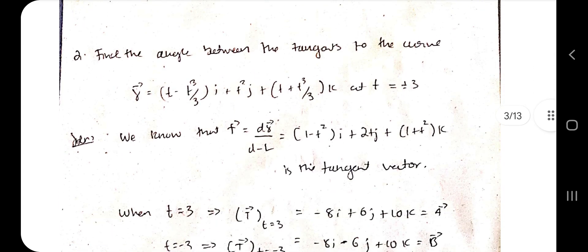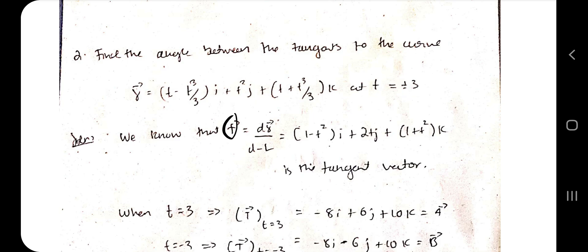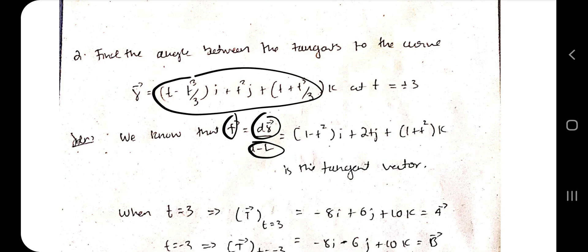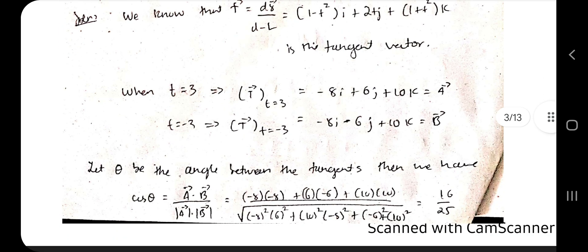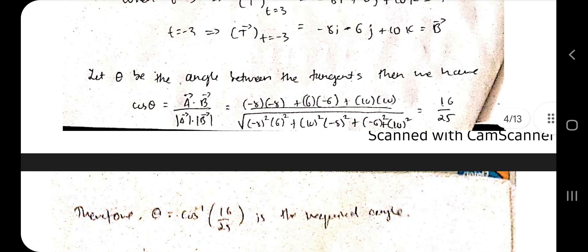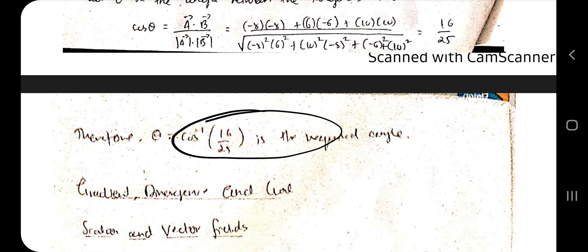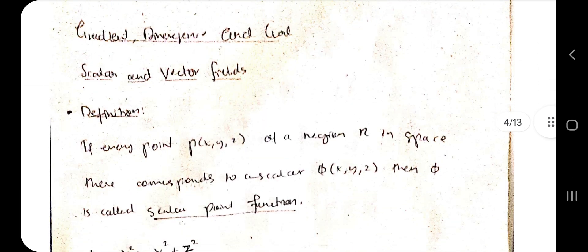Consider another example where you have to find the angle between the tangents to a curve at t = +3 and t = −3. Differentiate the vector with respect to t to get the tangent vector. Evaluate at t = 3 and t = −3 to get vectors a and b, then apply the cos θ formula. The answer comes out as θ = cos⁻¹(16/25).